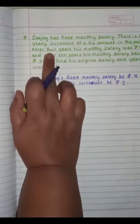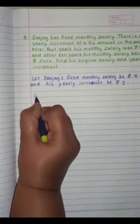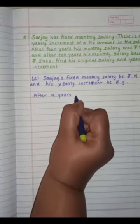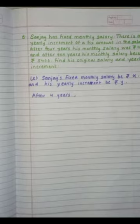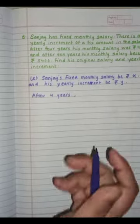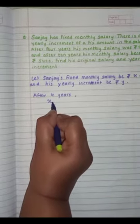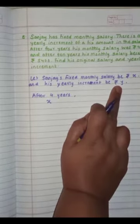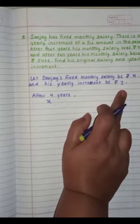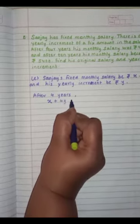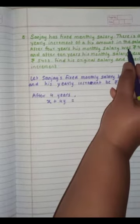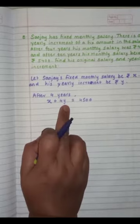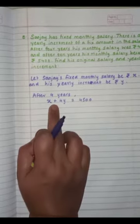Now students, they given condition for after 4 years. So after 4 years, his salary will remain same because it is original. So after 4 years, his salary become X only. But his increment will become more. So first it is Y. So after 4 years, it will be 4Y. So X plus 4Y is equal to what salary they mentioned? 4,500. Salary and increment together make 4,500. That is why we did plus here.